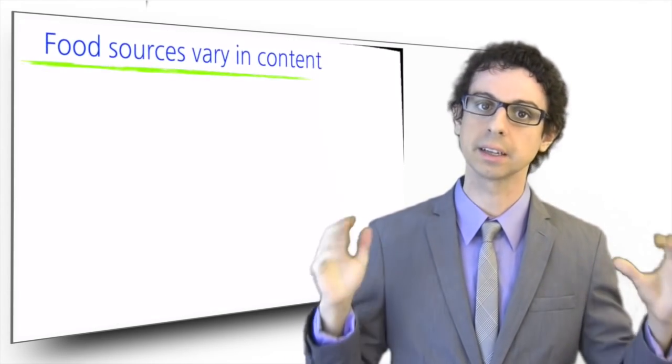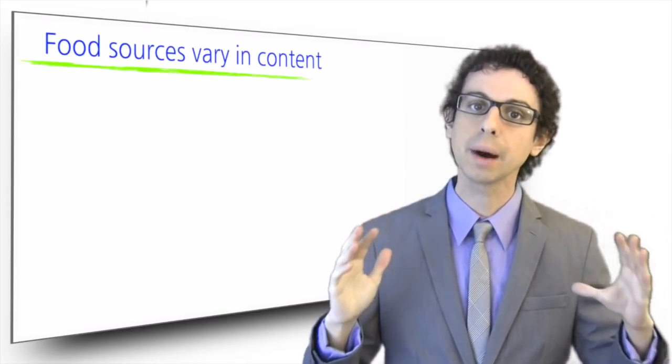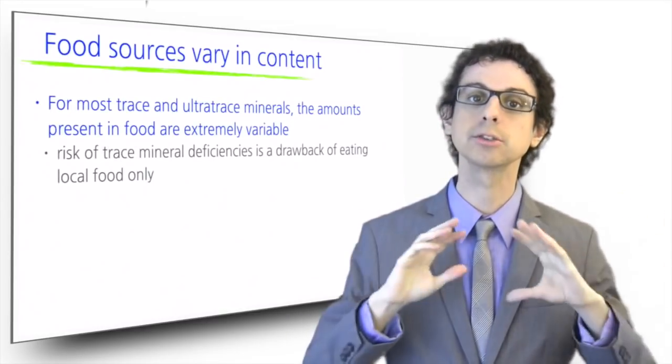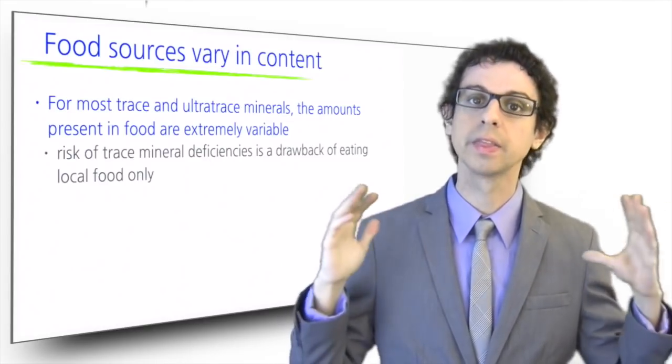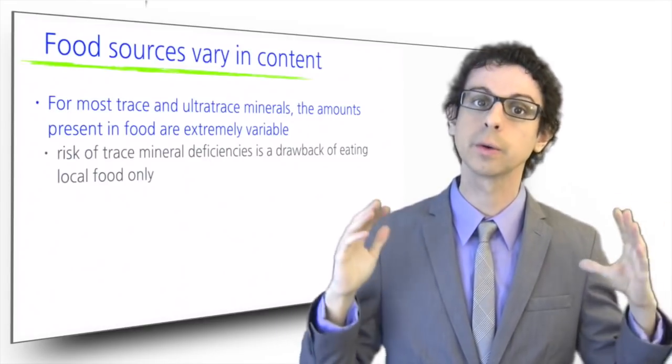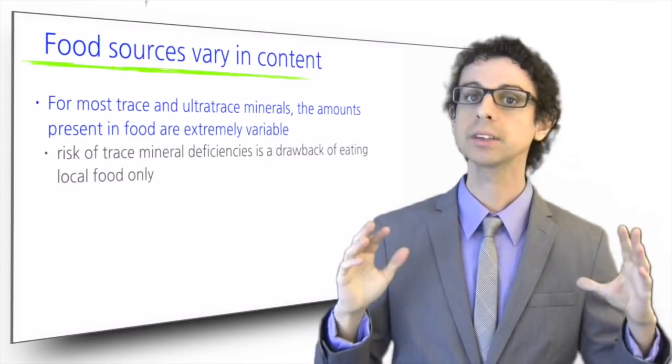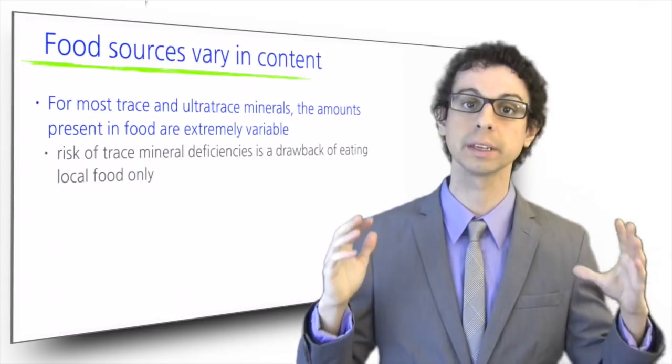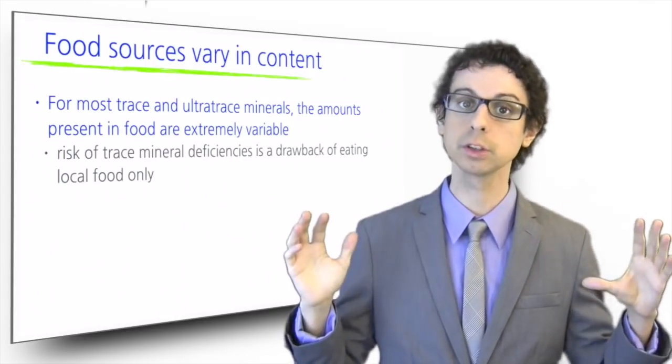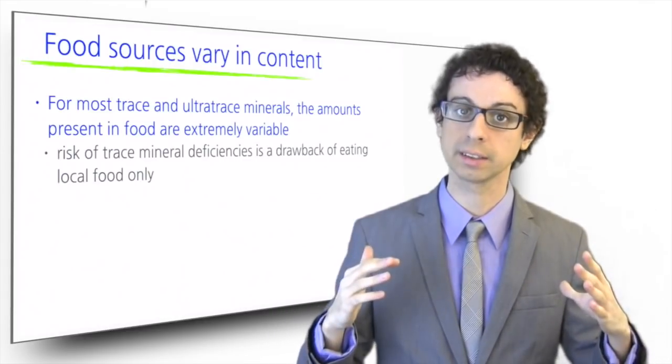For most trace and ultra trace minerals, the amounts present in food are extremely variable depending on the soil where plants grow, the food that animals eat, or the water that they drink. For example, in many areas of China, the soil is extremely poor in selenium.